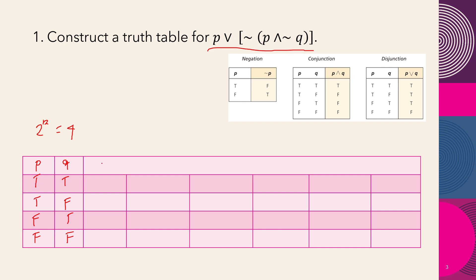We write all the components of the statement in the table: p, disjunction, negation of p, conjunction, negation of q. Writing all statements in the table makes it easier to assign the true and false values. Since there is an inner part, we work from the inner to the outer part.